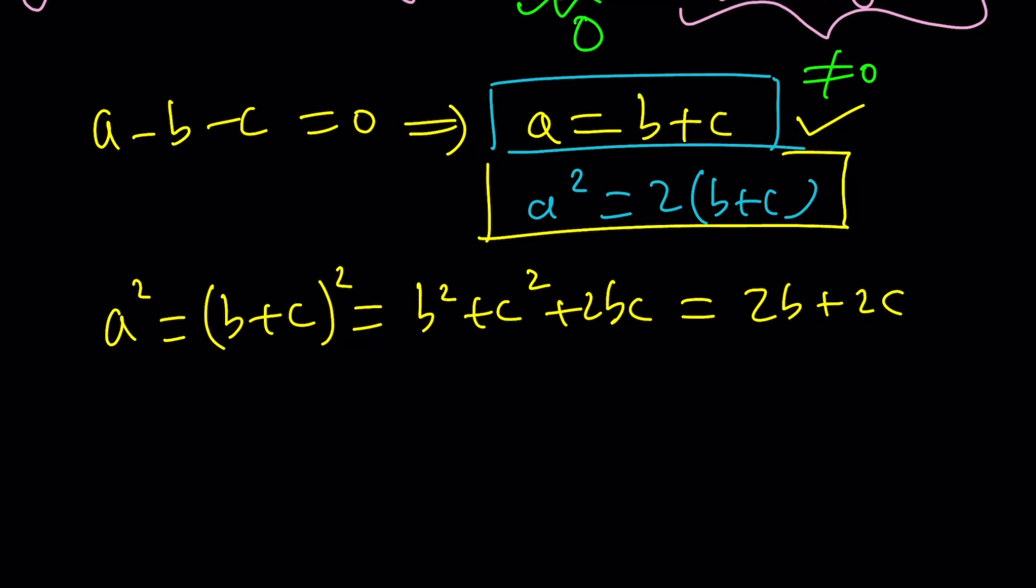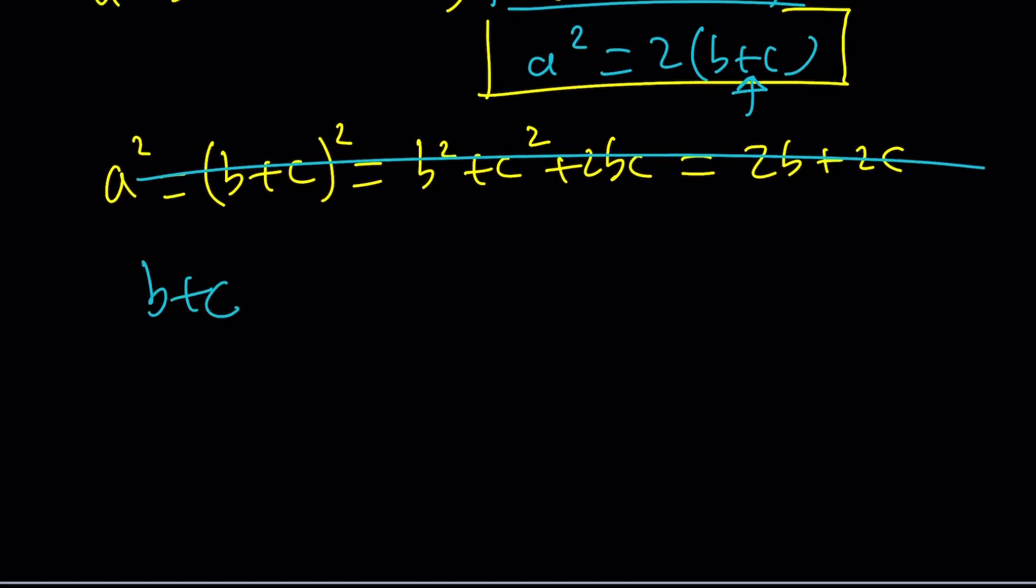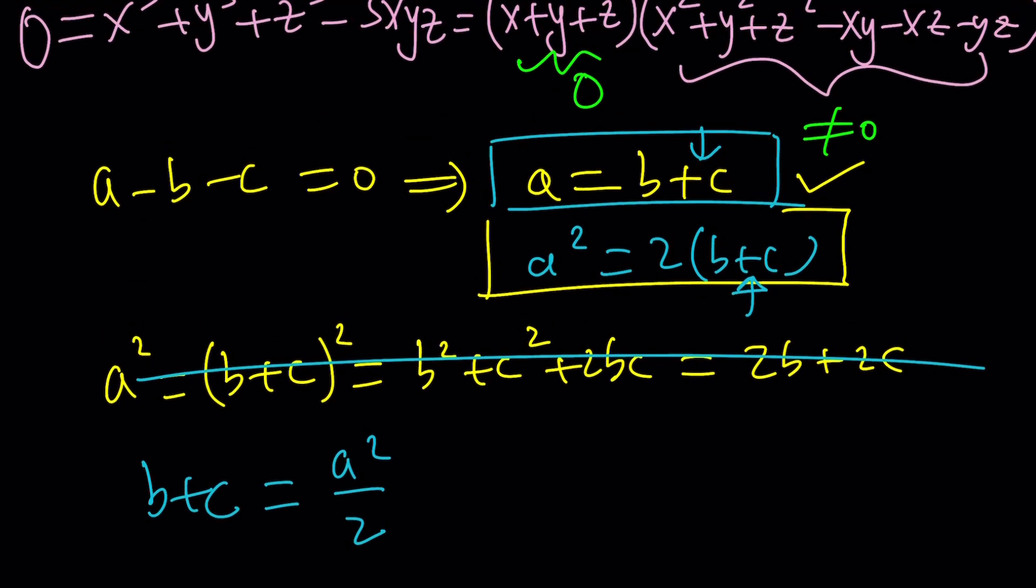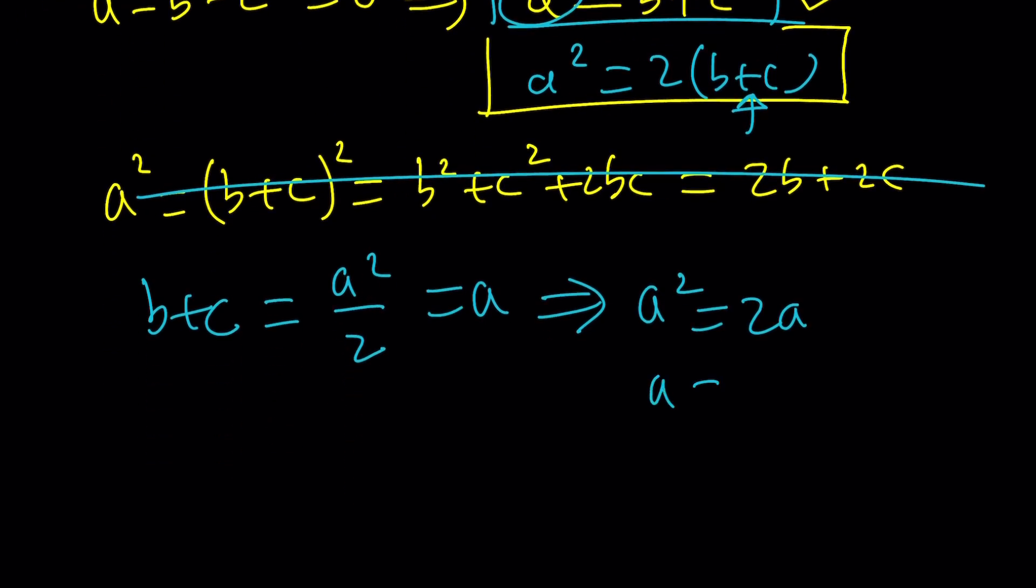I don't think we need this. We can do a better job. Why not isolate b plus c from both of these equations? This first one already has it. From the second equation, b plus c is half of a squared, and then that is equal to a, which is beautiful because from here we get a squared equals 2a, right? And this means a is equal to 2. Why? Because a can't be zero. Remember, we're dealing with positive integers. Beautiful. We found a.